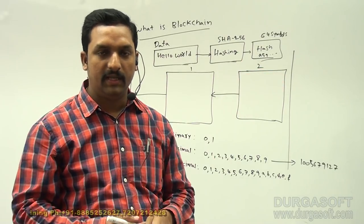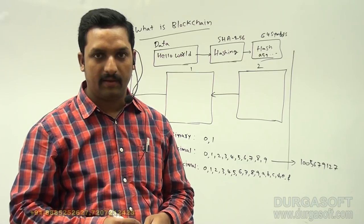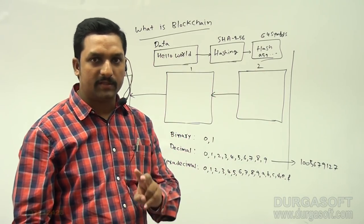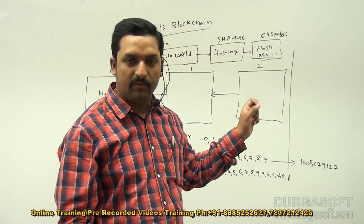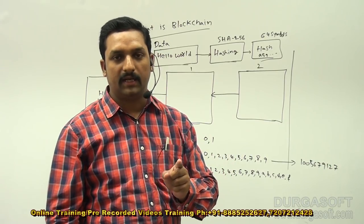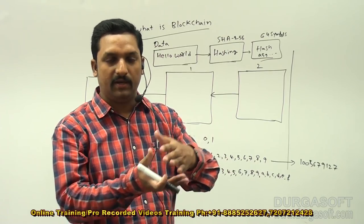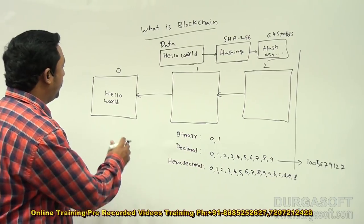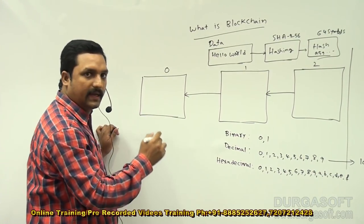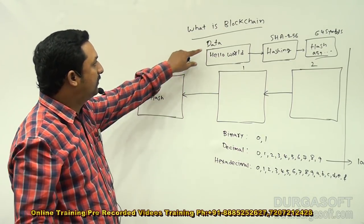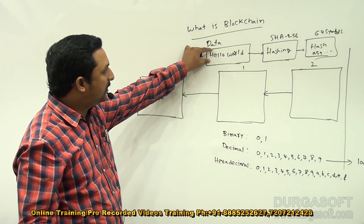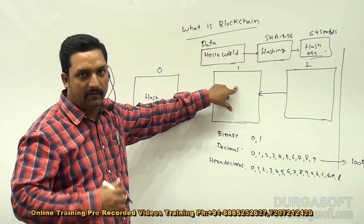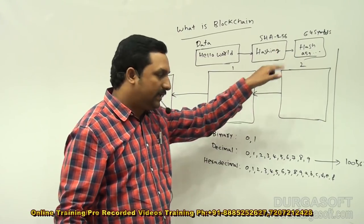One more reason: if you keep storing the original data as-is, the size increases enormously. Suppose you give a 10 MB picture or a 1 GB video — even that 1 GB video can be converted into just 64 symbols. Four symbols equal 1 byte, so 64 symbols equal 32 bytes. That 1 GB of data becomes equal to just 32 bytes. So the size of the data is drastically reduced — that is also a reason why we convert to hash format. We should never store data in original format; we must always store data in the form of hash.